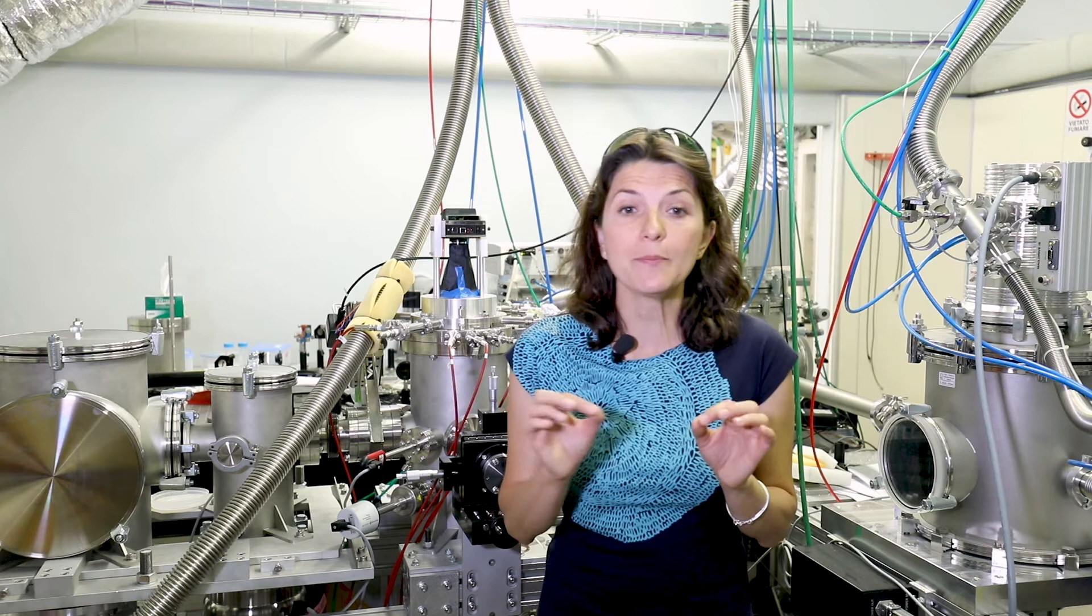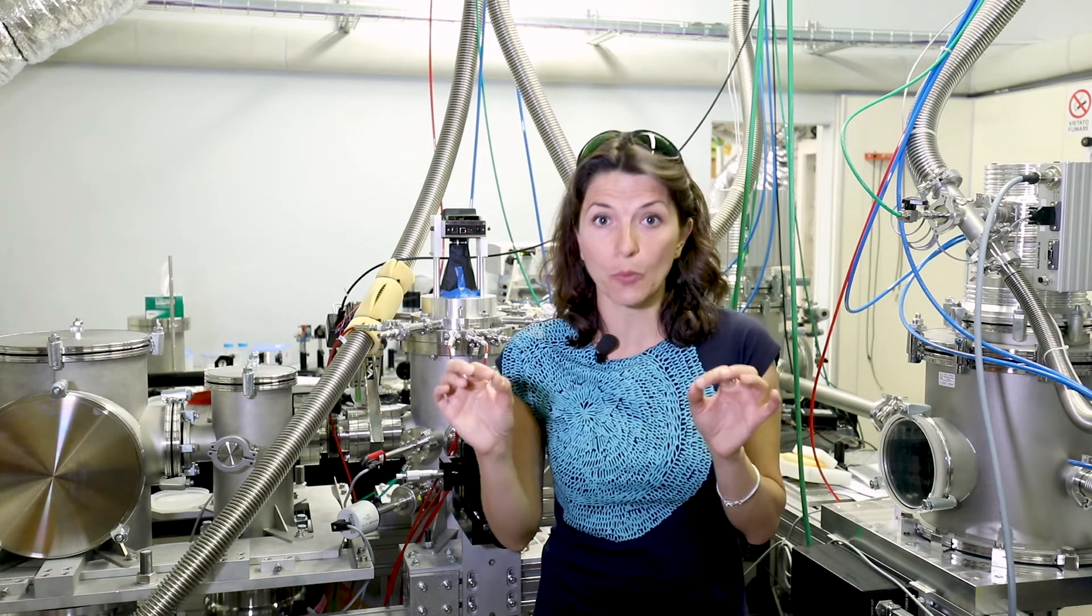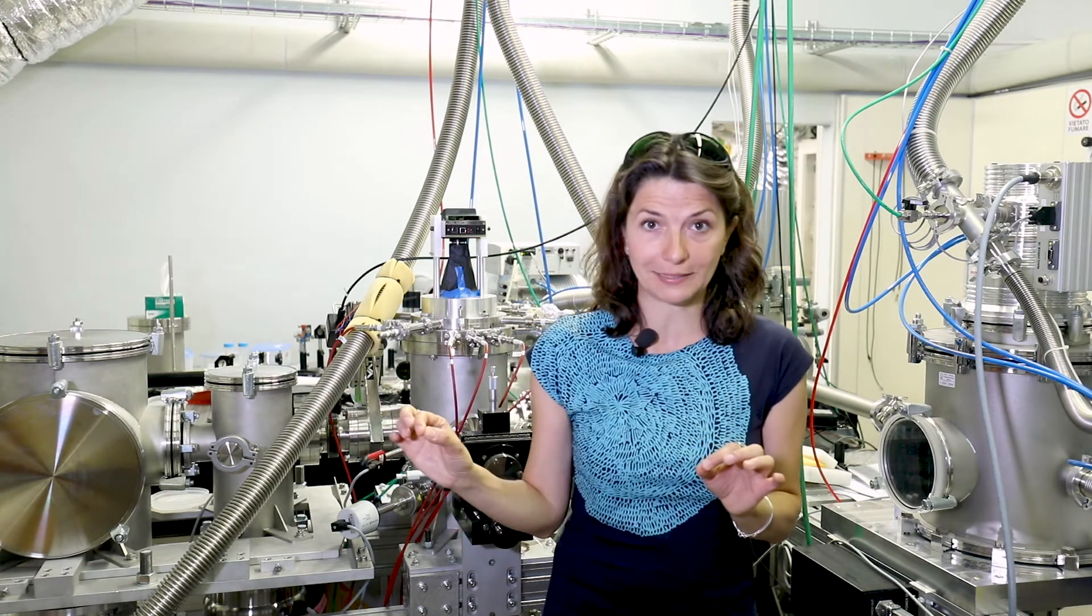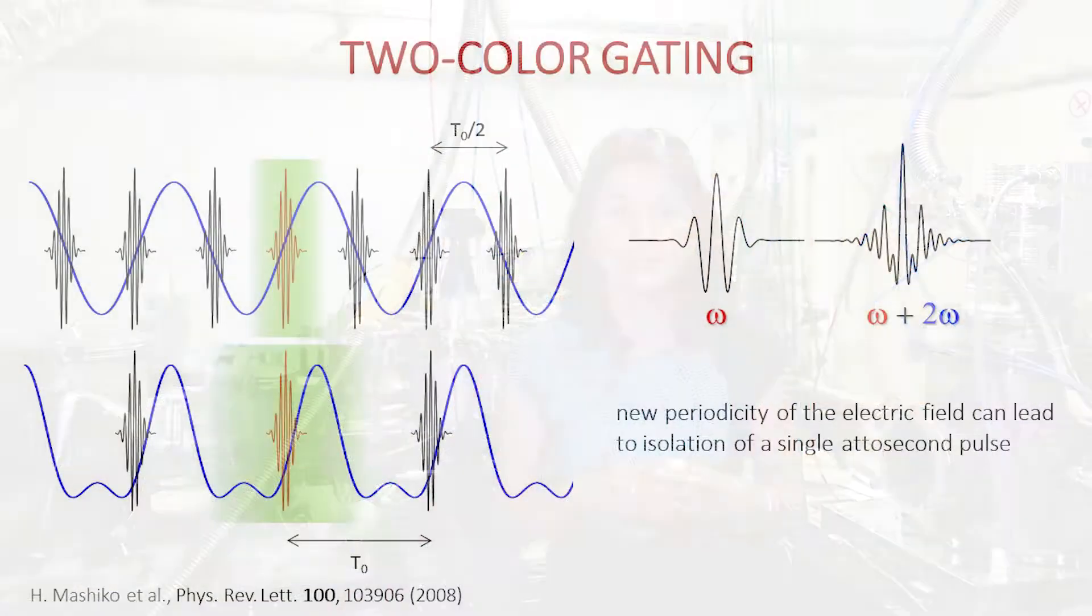Another possible approach for the manipulation of the external electric field is the combination of different color components. For instance, in double optical gating, the second harmonic of the driving field is combined with the fundamental driving pulse to change the periodicity of harmonic emission from half the period of the fundamental driving laser to the full period. This scheme can be efficiently combined with polarization gating in the double optical gating or generalized double optical gating approach.